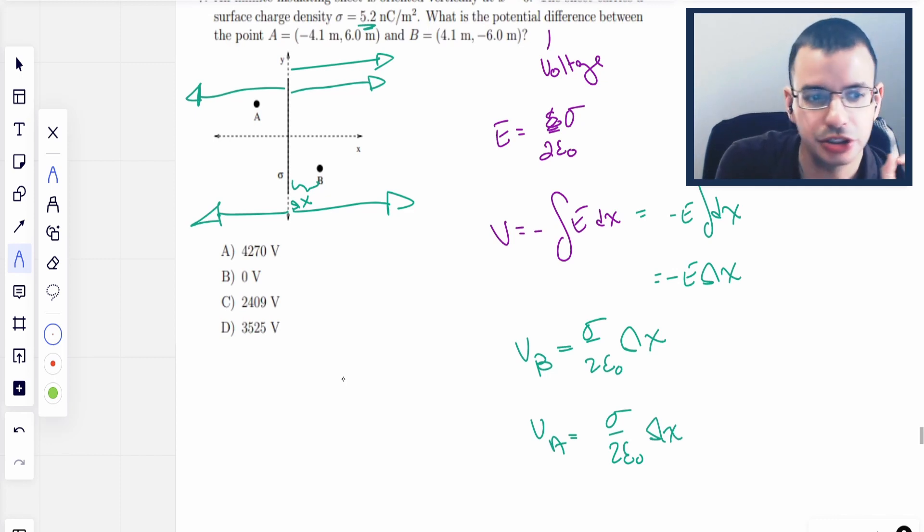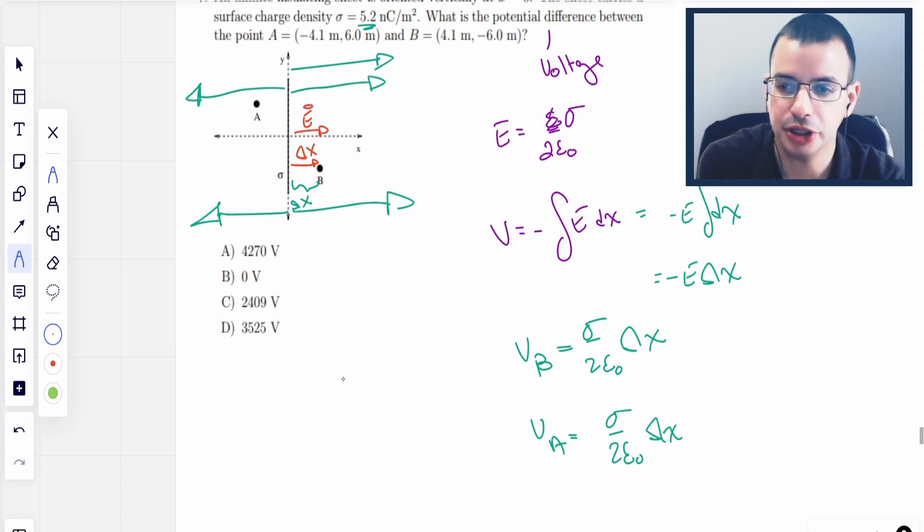And the question here is then going to be one of the signs. These are both going to be the same. So we think about this voltage at B. Delta x is this way. The electric field is also this way. Therefore, E times delta x are both going to be positive, or the same sign. Because it's positive E times a positive delta x.